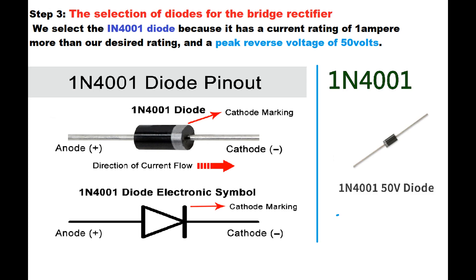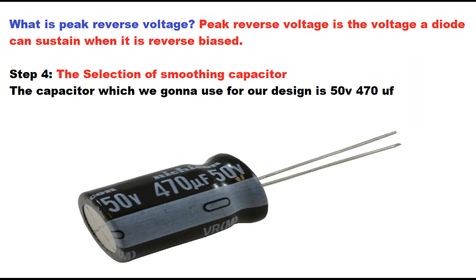Step 3: The selection of diodes for the bridge rectifier. We select the IN4001 diode because it has a current rating of 1 ampere, more than our desired rating, and a peak reverse voltage of 50 volts. Peak reverse voltage is the voltage a diode can sustain when it is reverse biased.